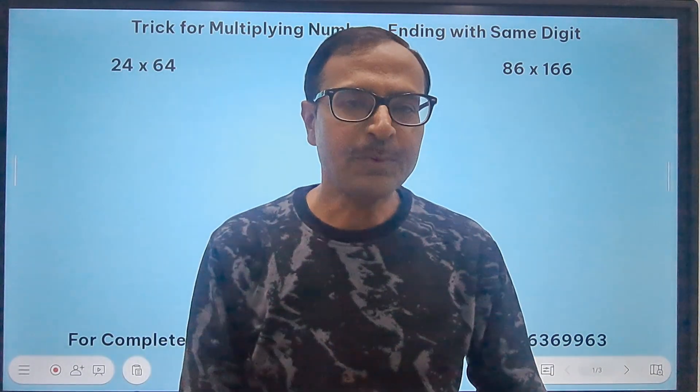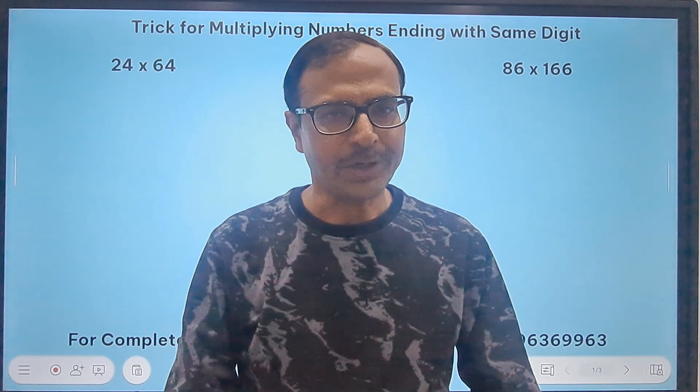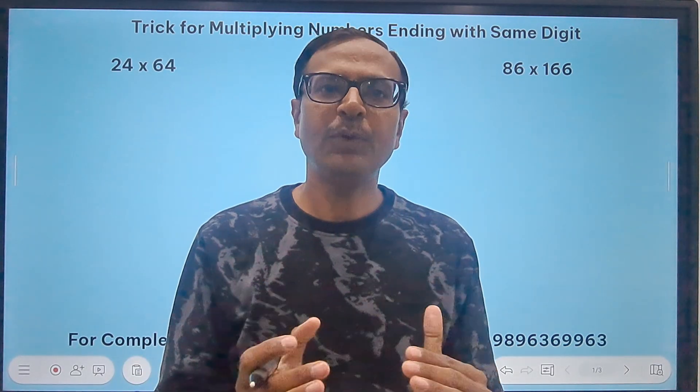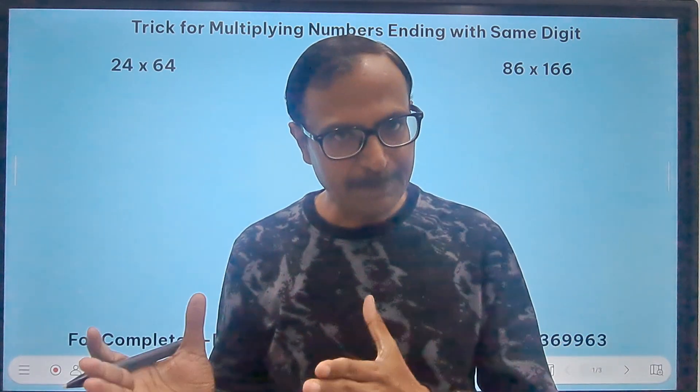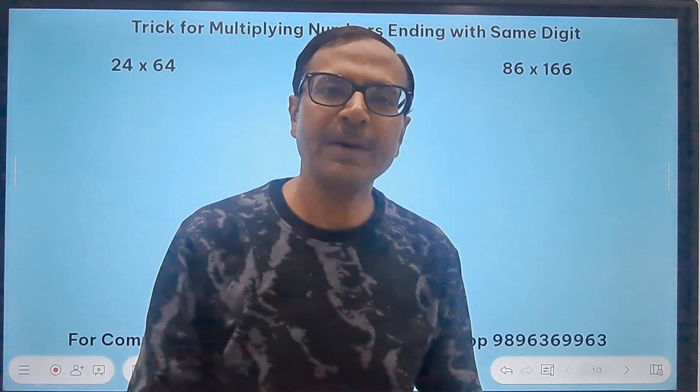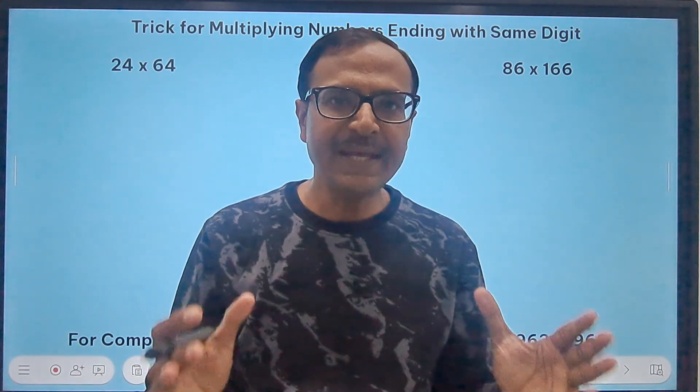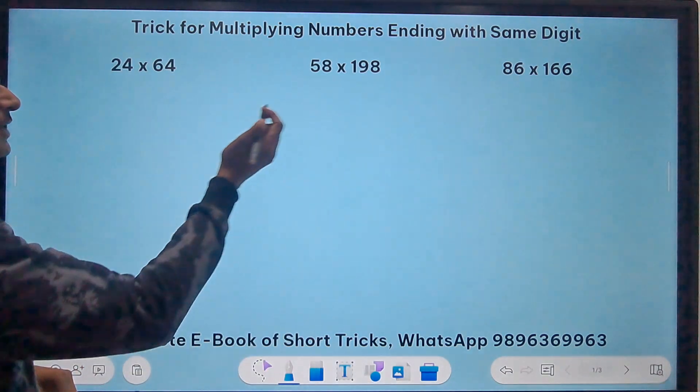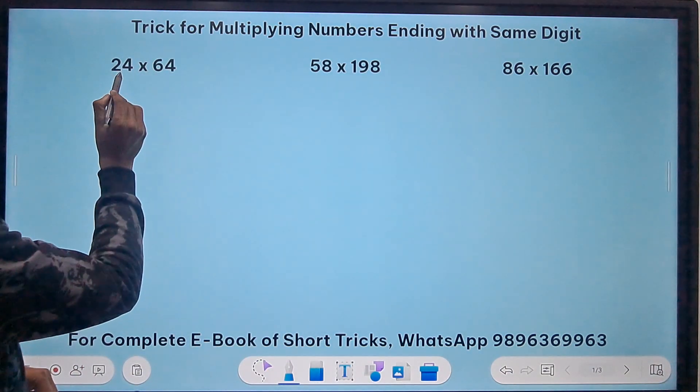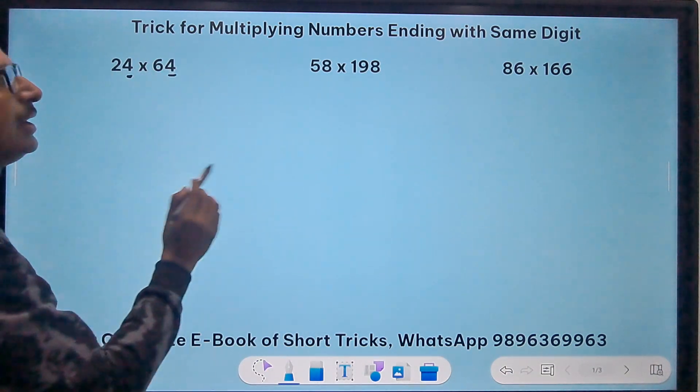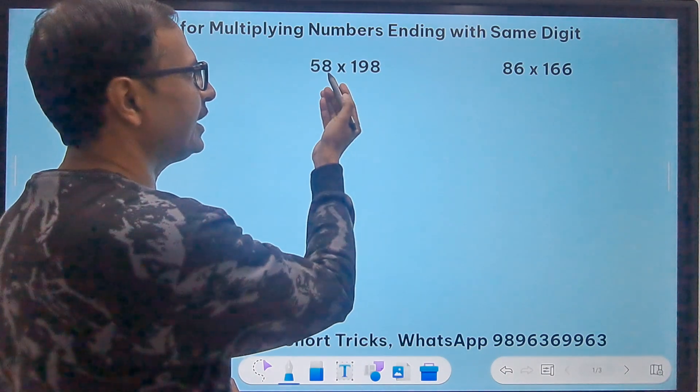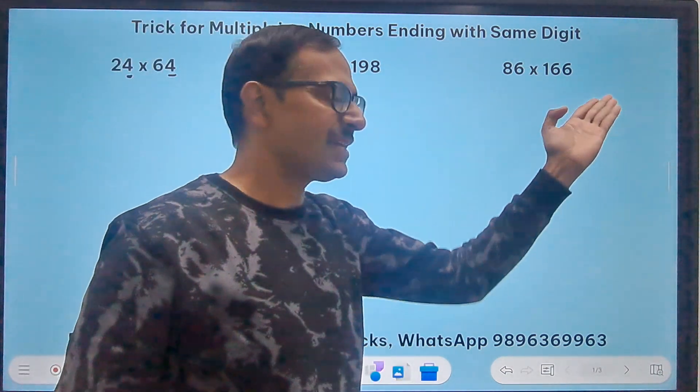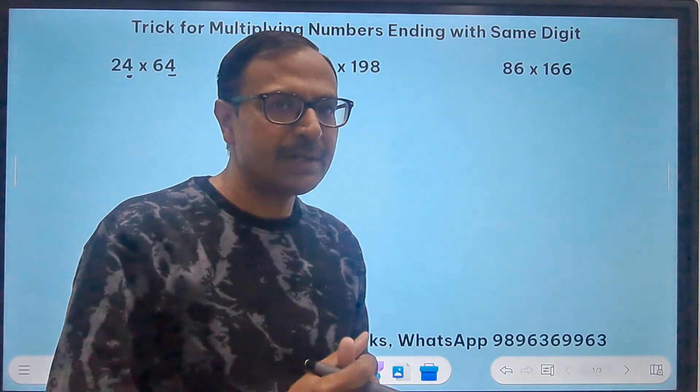Hello friends, welcome to Suresh Agarwal's mathematics shortcuts. Yet another video for fast multiplication. This time I'm going to take up numbers which end in the same digit, like you can see some numbers written here: 24 times 64 they end in the same digit 4, likewise 58 times 198 they end in 8, ending in 6.